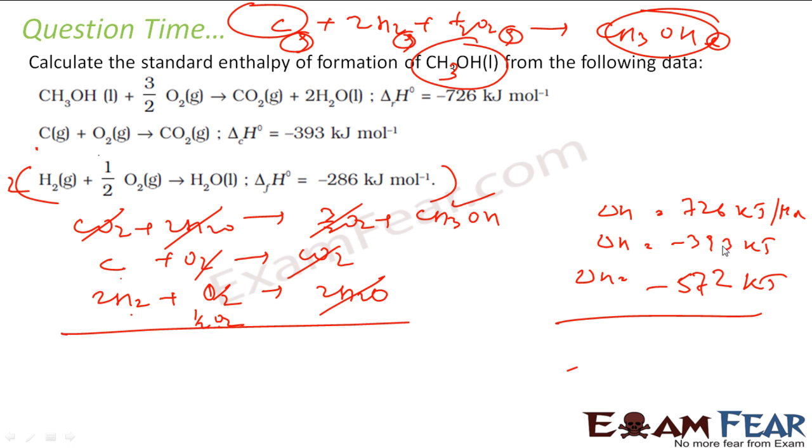So if you add all these things: 726 minus 393 minus 572, you get delta H total is nothing but minus 239 kilojoule per mole. And that is my answer.